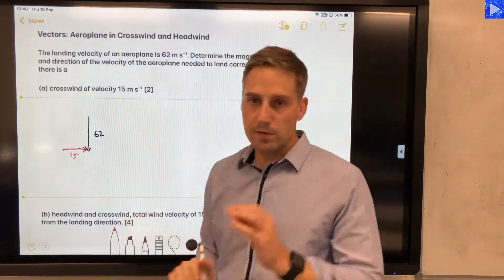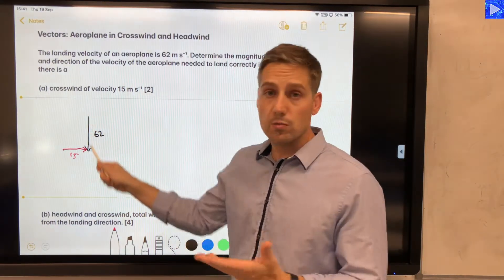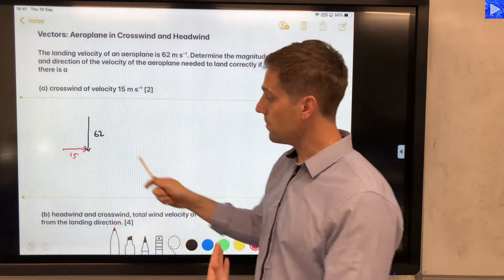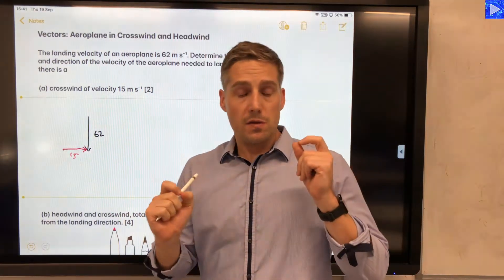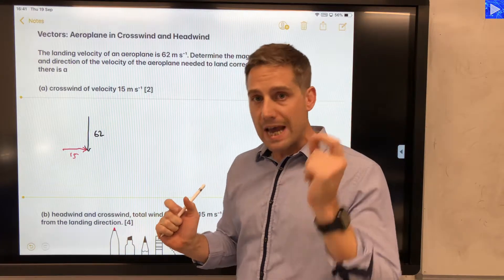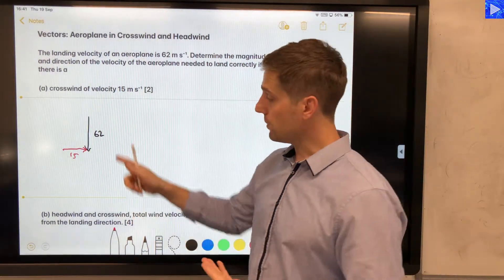Now you notice I've drawn that head-to-head with the resultant vector. That's important to remember. This is the resultant vector that we want to achieve, so I'm not trying to add this to this one. What I'm trying to do is determine the velocity vector of the airplane that I need to add to this crosswind to give me 62. So that's the reason for me doing that.